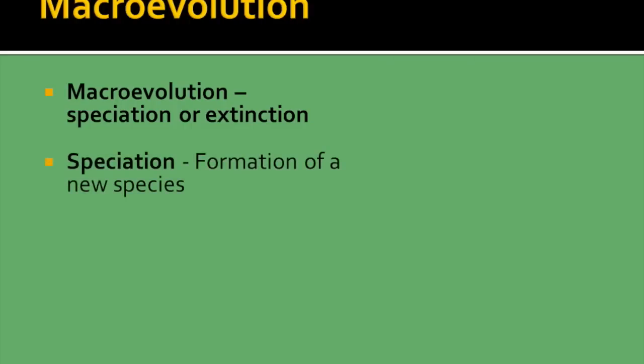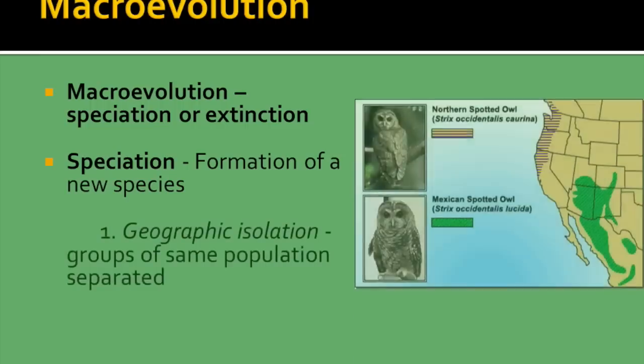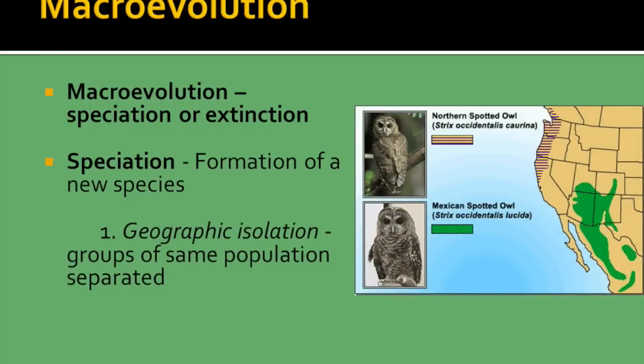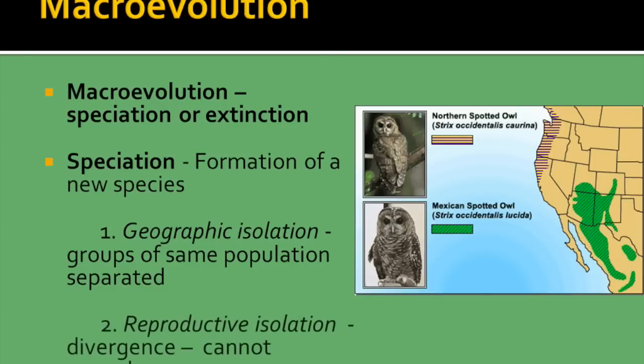Macroevolution takes a look at speciation or extinction — the creation of a new species or the end of a species. With speciation and the formation of a new species, this can happen based on geographic isolation, where groups of the same population get separated, or reproductive isolation, which we also call divergence, meaning they then can't reproduce.